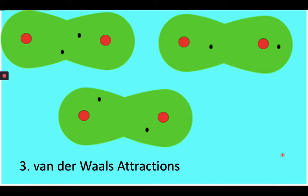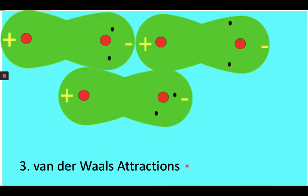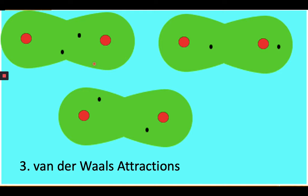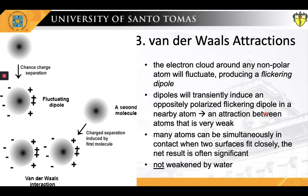The third non-covalent interaction is the Van der Waals attraction, also known as London dispersion forces. Van der Waals interaction is a distance-dependent interaction between atoms or molecules. Unlike ionic or covalent bonds, these attractions do not result from a chemical-electronic bond — they are comparatively weak and more susceptible to disturbance. The Van der Waals force quickly vanishes at longer distances between interacting molecules. The electron cloud around any non-polar atom will fluctuate, producing a flickering dipole. Such dipoles will transiently induce an oppositely polarized flickering dipole in a nearby atom, generating an attraction between atoms that is very weak. But since many atoms can be simultaneously in contact when two surfaces fit closely, the net result is often significant. Notably, Van der Waals attractions are not weakened by water.